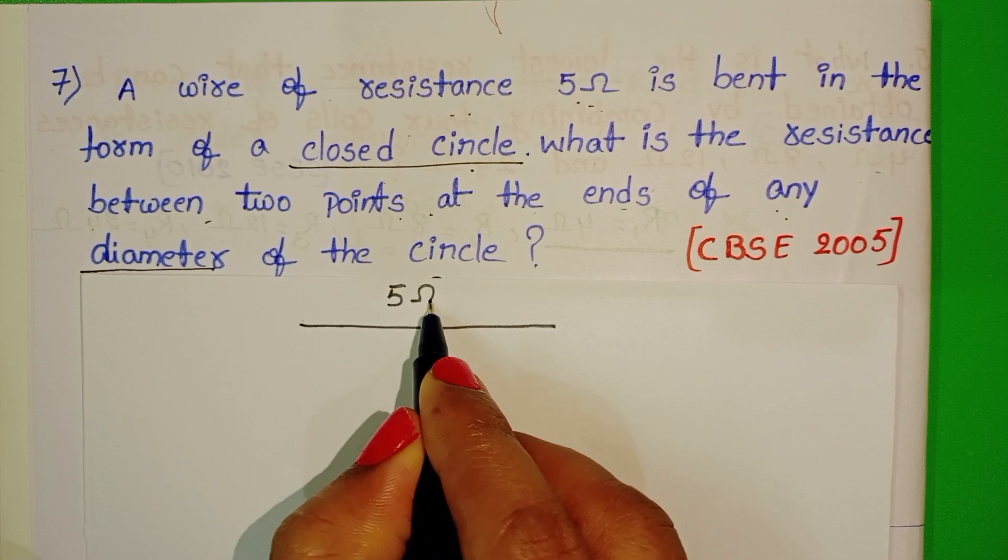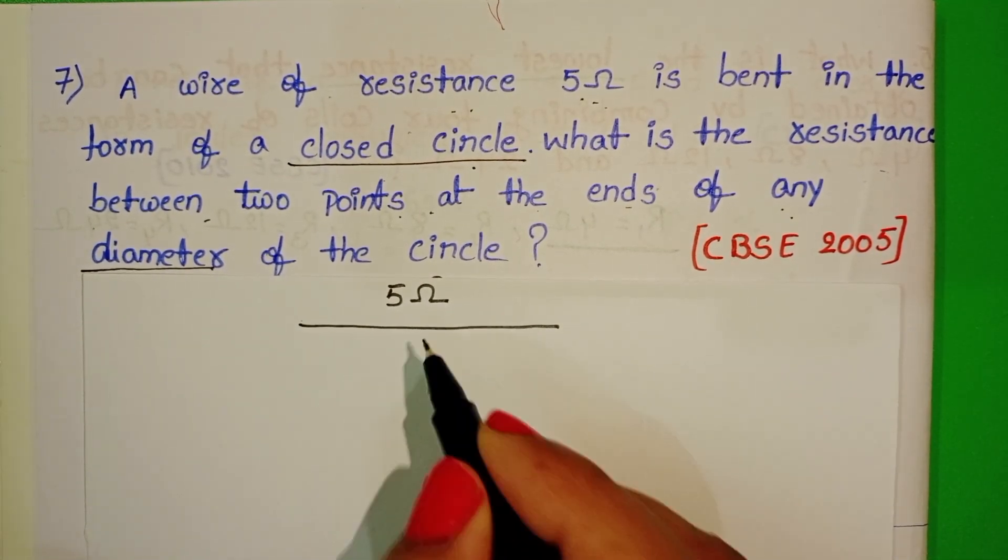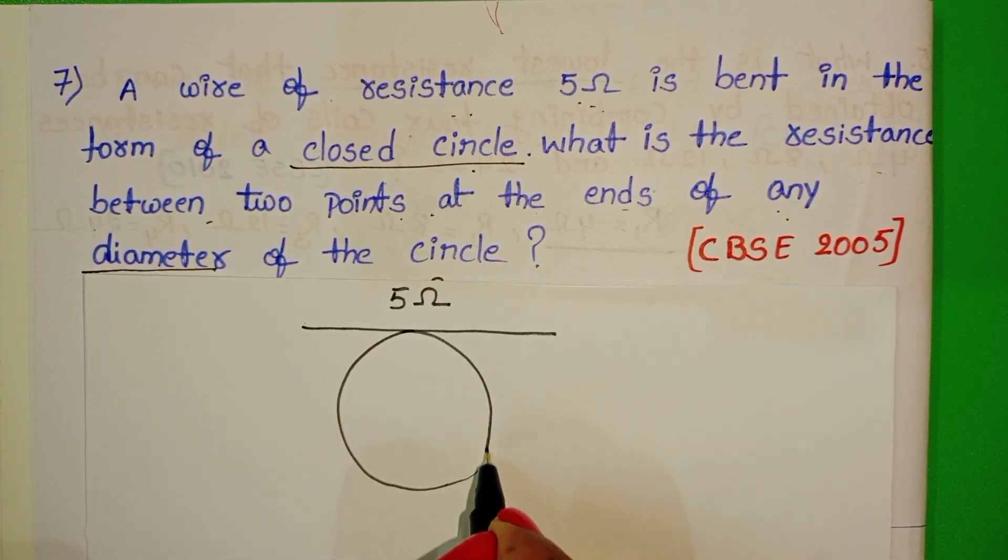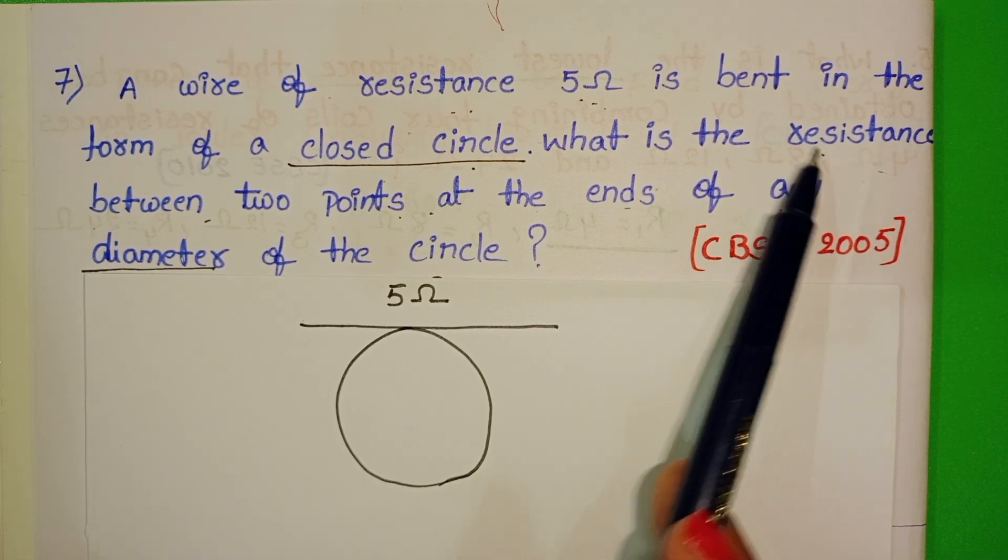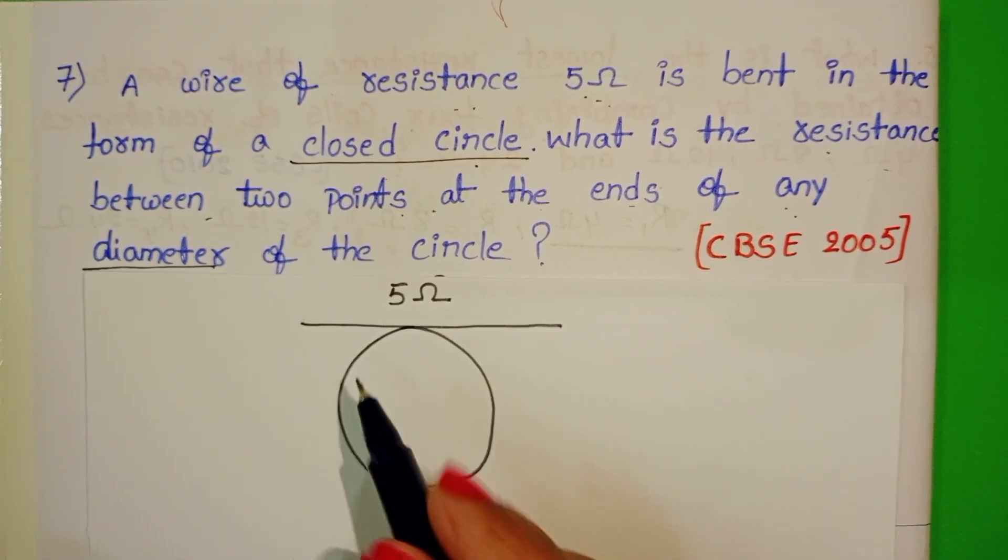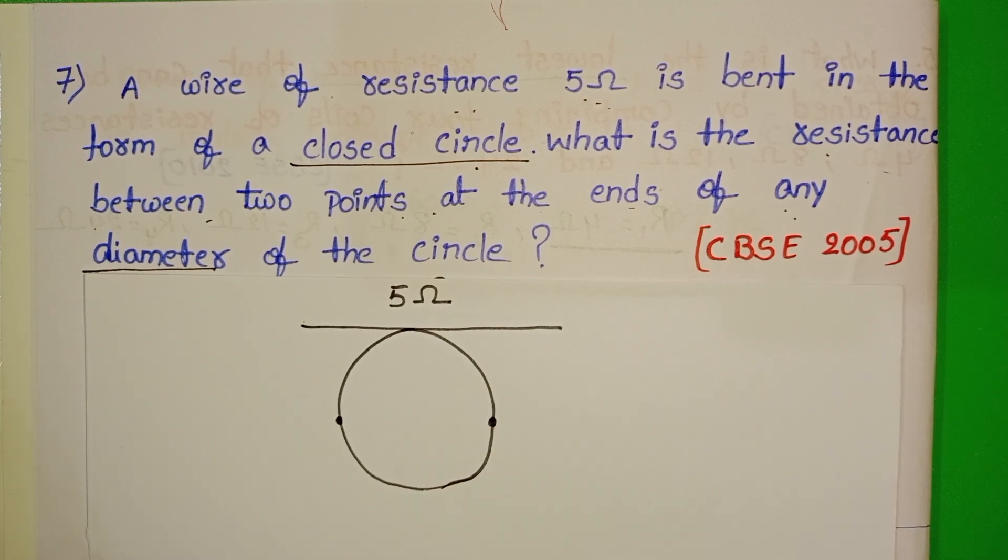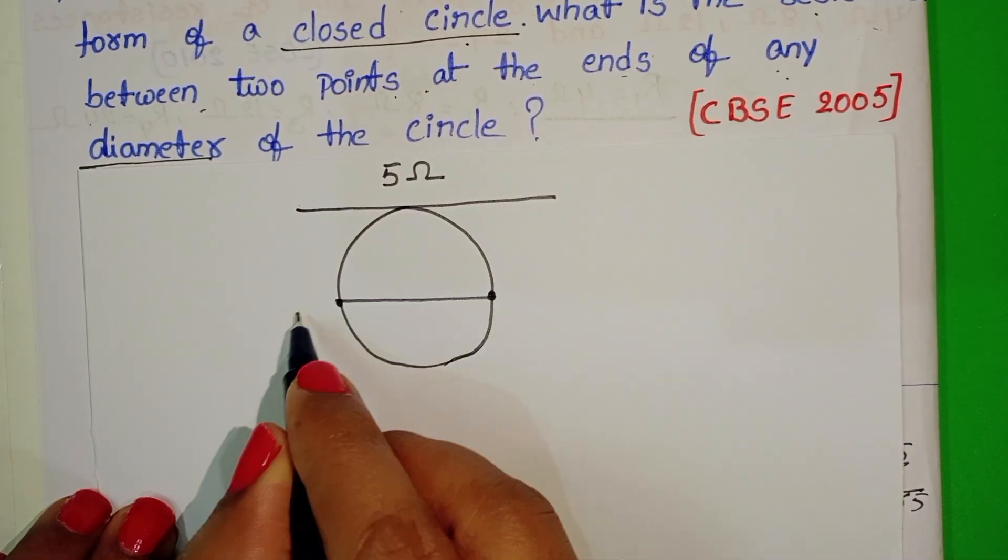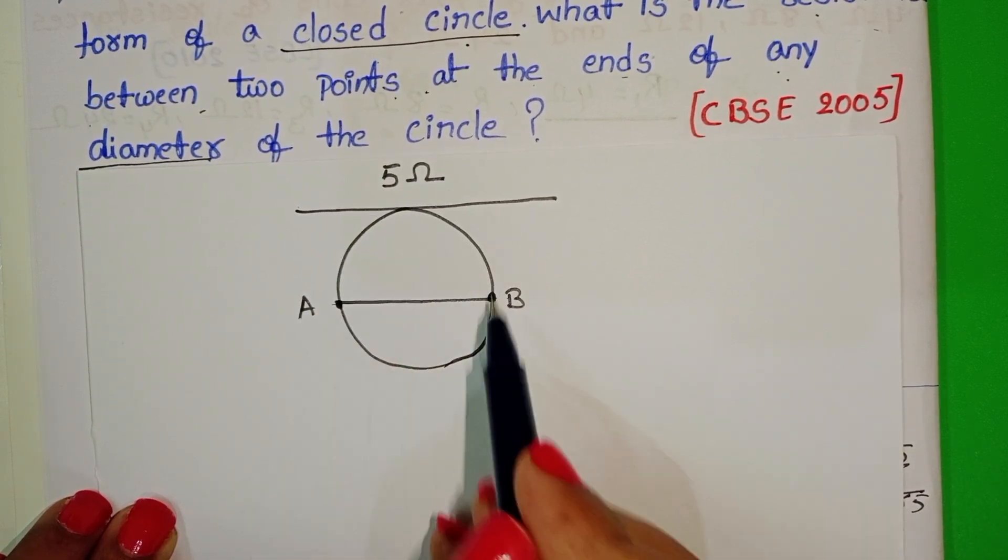Given resistance of the wire is 5 ohm. Now this wire is bent in the form of a circle. We have to find out the resistance between two points at the ends of any diameter of the circle. So let us take AB as the diameter of this circle.